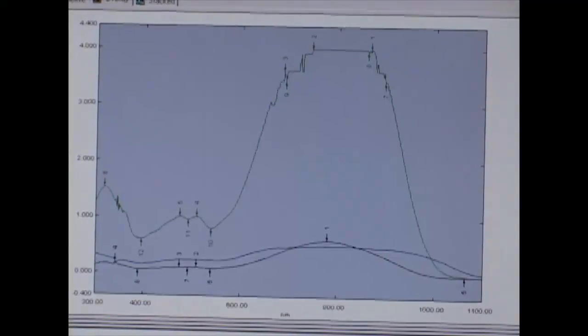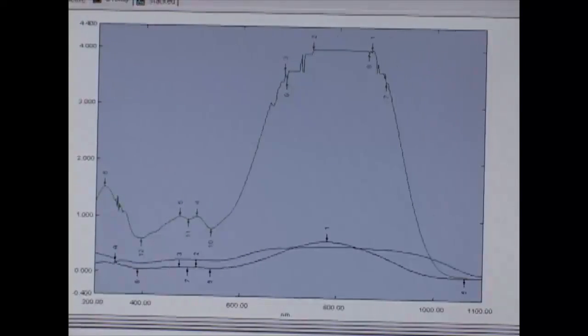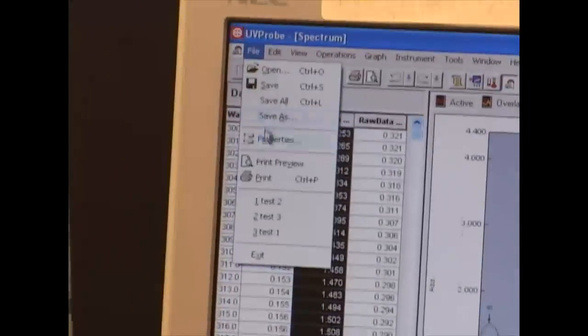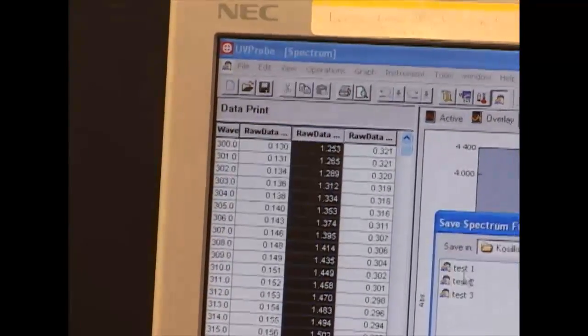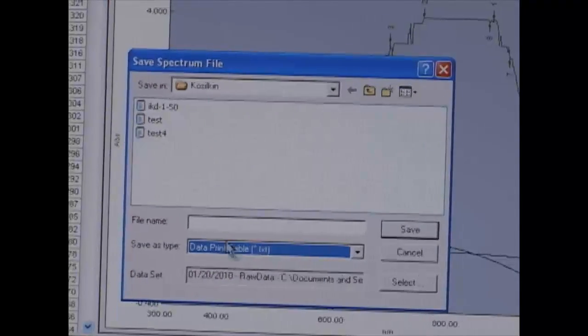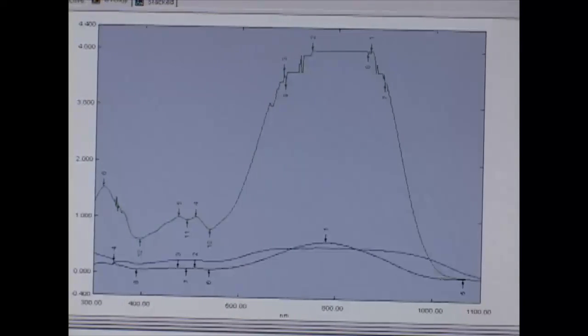Don't forget to save your data. To do that, select the spectrum of interest. For example, this one, go to file, save as, data print table, give it a name, and this is pretty much it.